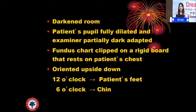To start indirect ophthalmoscopy, first make sure the room is darkened, the patient's pupil is fully dilated, and the examiner is partially dark adapted. The fundus chart is clipped on a rigid board that rests on the patient's chest, oriented upside down where 12 o'clock faces the patient's feet and 6 o'clock is towards the chin. From our training, we had three rules: direct ophthalmoscopes were banned; the room had to be dimmed or switched off; and we always had color pencils in our coat pockets with the fundus chart — without the fundus chart, indirect ophthalmoscopy has no meaning.